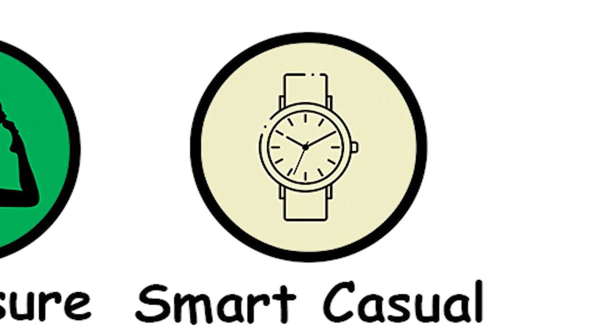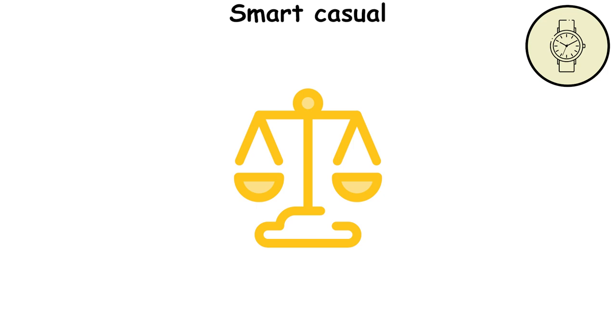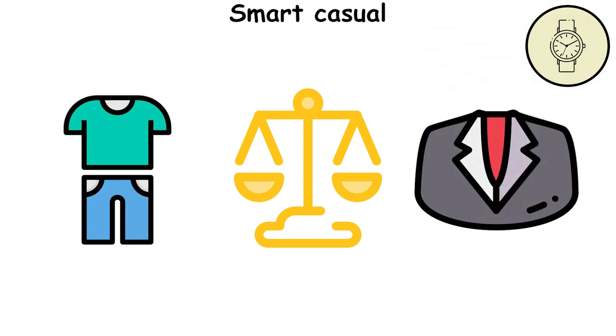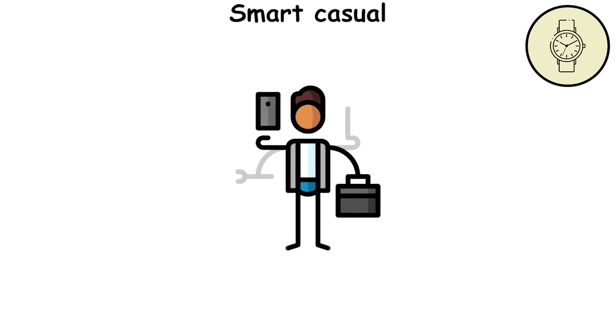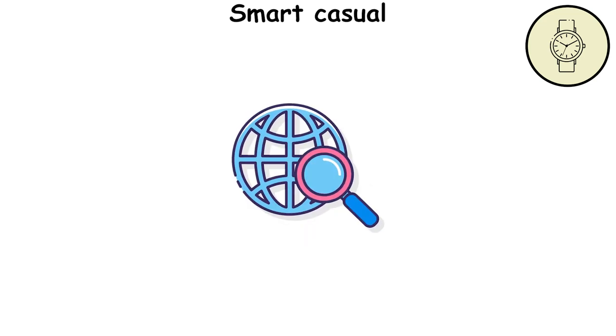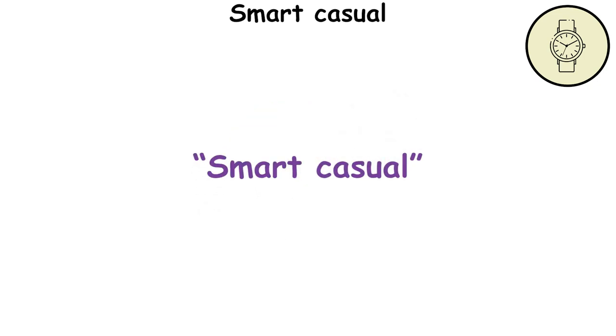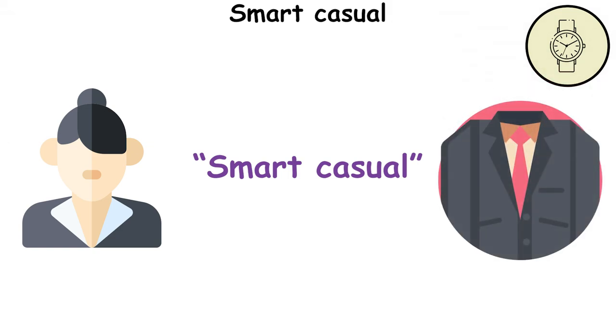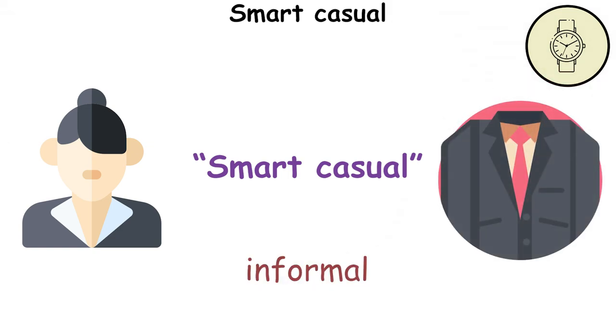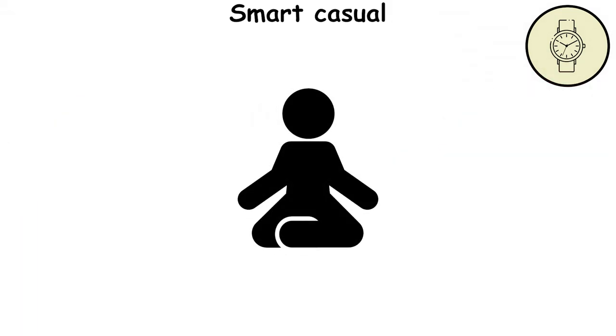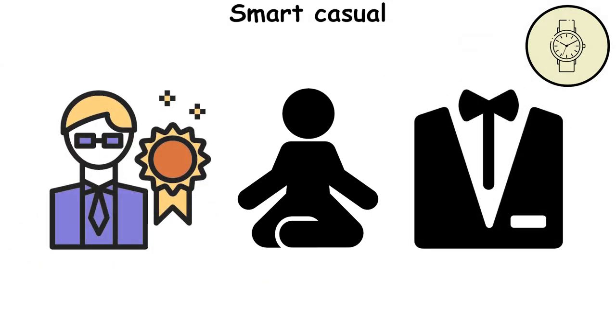Smart Casual is a style that strikes a balance between too formal and too casual. It's about looking put together without being overdone. It's a versatile style that can be adapted for many occasions. The term smart casual is defined as neat, conventional, yet relatively informal in style. It's more relaxed than traditional business wear, but still intended to give a professional and business-like impression.